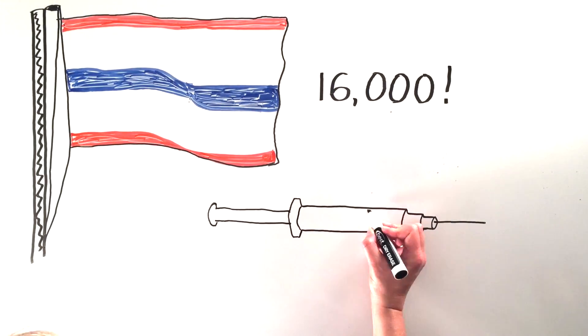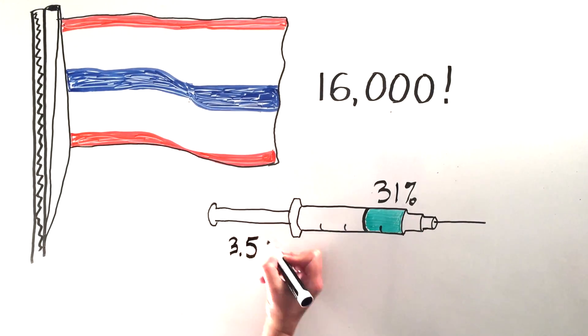At the end of the U.S. Army-led study, researchers observed a modest 31% reduction in HIV infection among vaccine recipients.